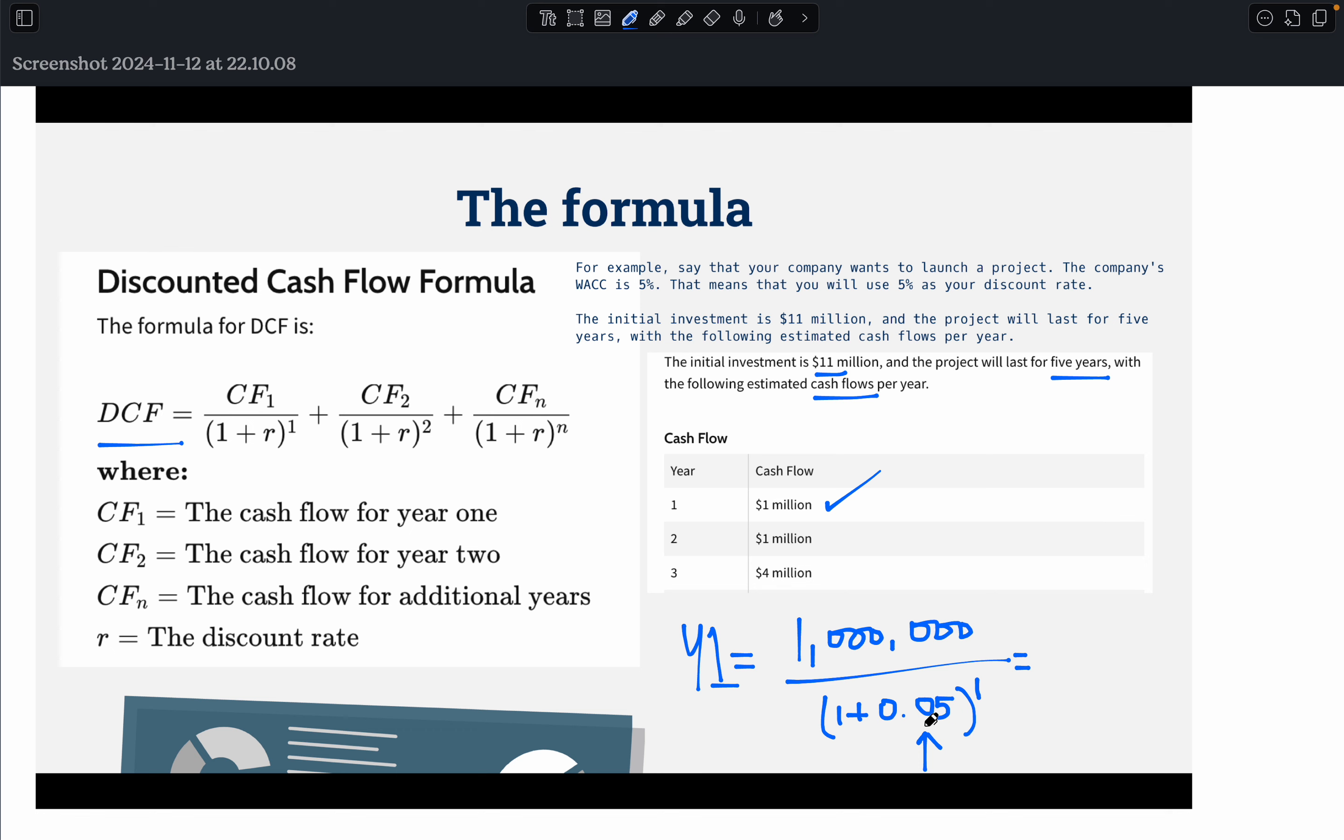How did we get 0.05? Well, we found in our question that the company's weighted average cost of capital is 5%. 5% is simply 0.05 and you do 1 plus 0.05 to the power of the number of years, which is year one.